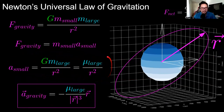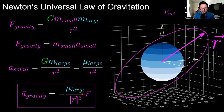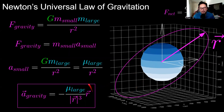Moving from scalar to vector form, we add a negative sign because the acceleration due to gravity is in the exact opposite direction of the spacecraft's position vector. We multiply by the vector and divide by the magnitude cubed, since one magnitude over three magnitudes equals 1/r².